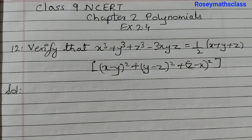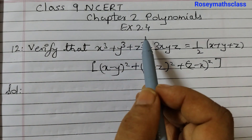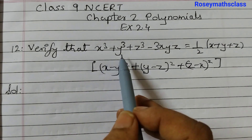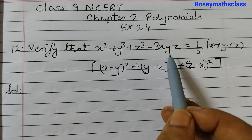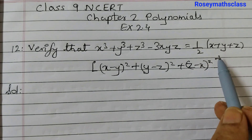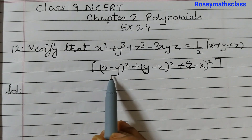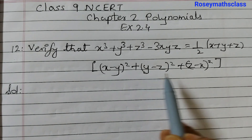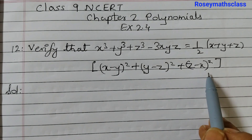Hello students, today we shall discuss question number 12 of exercise 2.4. Verify that x cubed plus y cubed plus z cubed minus 3xyz equals to 1 by 2 into x plus y plus z into x minus y whole squared plus y minus z whole squared plus z minus x whole squared.